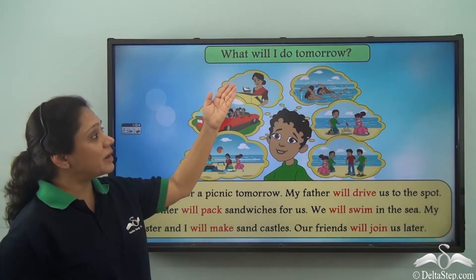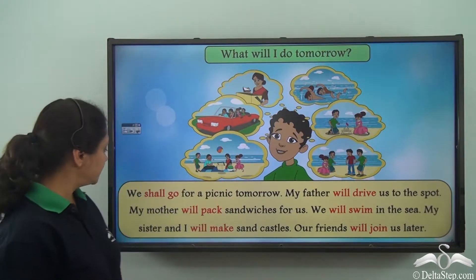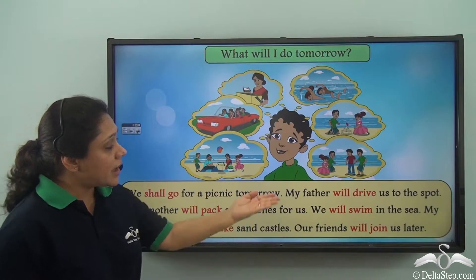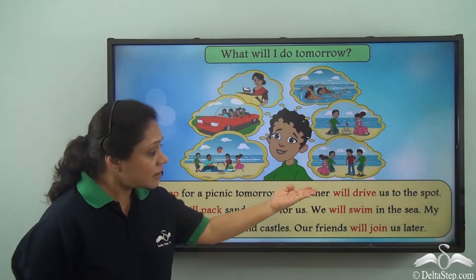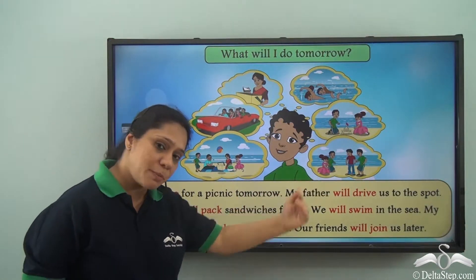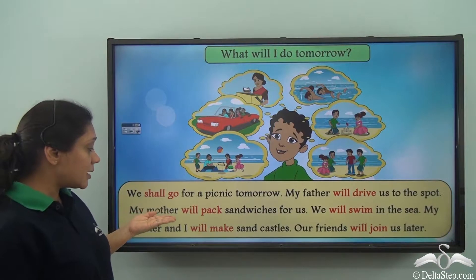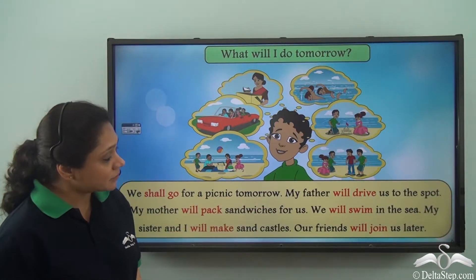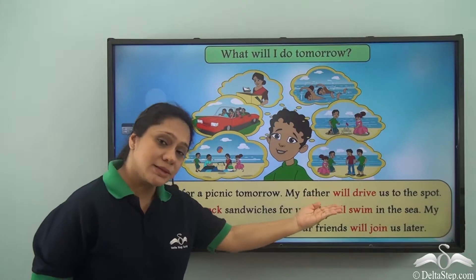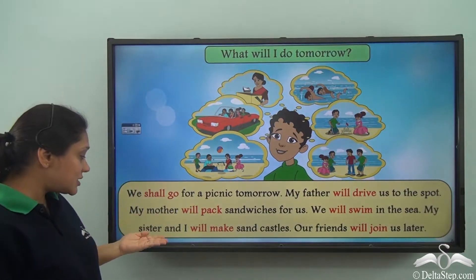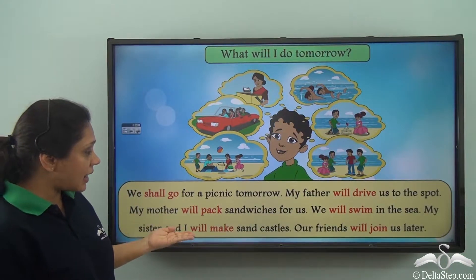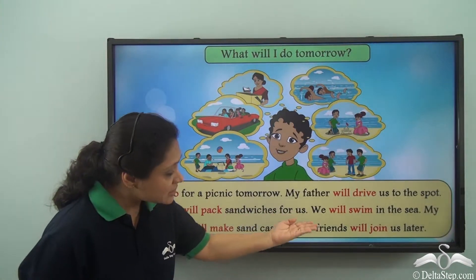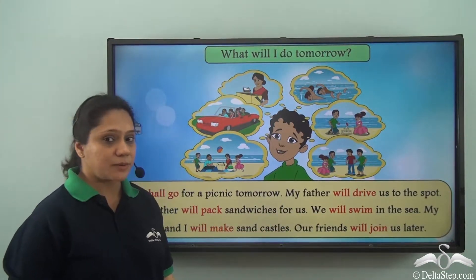What will I do tomorrow? We shall go for a picnic tomorrow. My father will drive us to the spot. My mother will pack sandwiches for us. We will swim in the sea. My sister and I will make sand castles. Our friends will join us later.